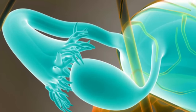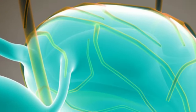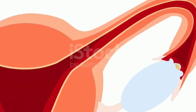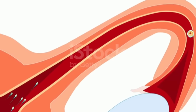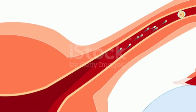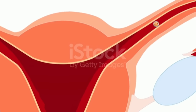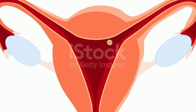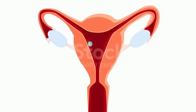The fallopian tubes or oviducts are two very fine tubes leading from the ovaries of the female into the uterus. On maturity of an ovum, the follicle and the ovary wall rupture, allowing the ovum to escape and enter the fallopian tube. There it travels toward the uterus, pushed along by movement of cilia on the inner lining of the tubes. This trip takes hours or days. If the ovum is fertilized while in the fallopian tube, it normally implants in the endometrium.